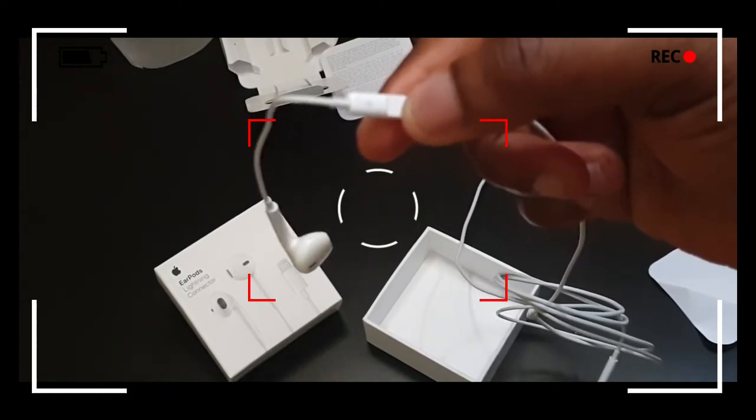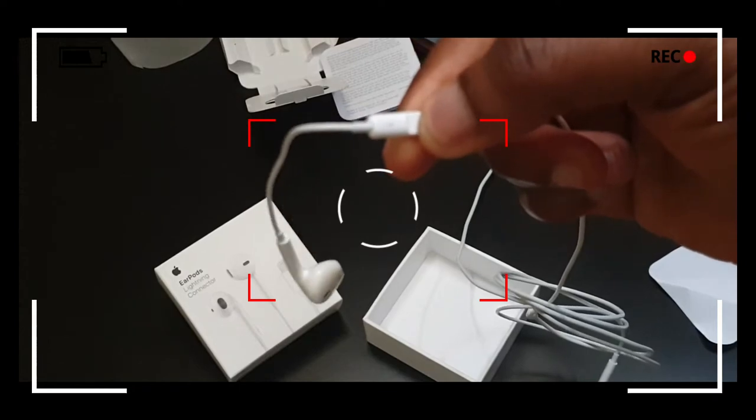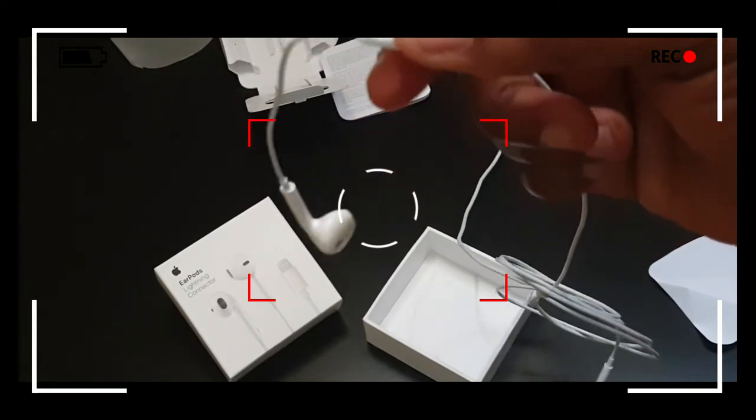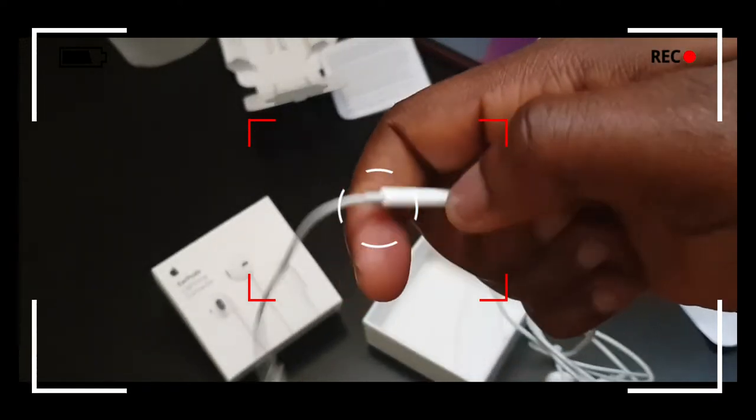With triple clicks, you can go to the previous song or chapter. With a double click and one prolonged click of the center button, you can rewind.